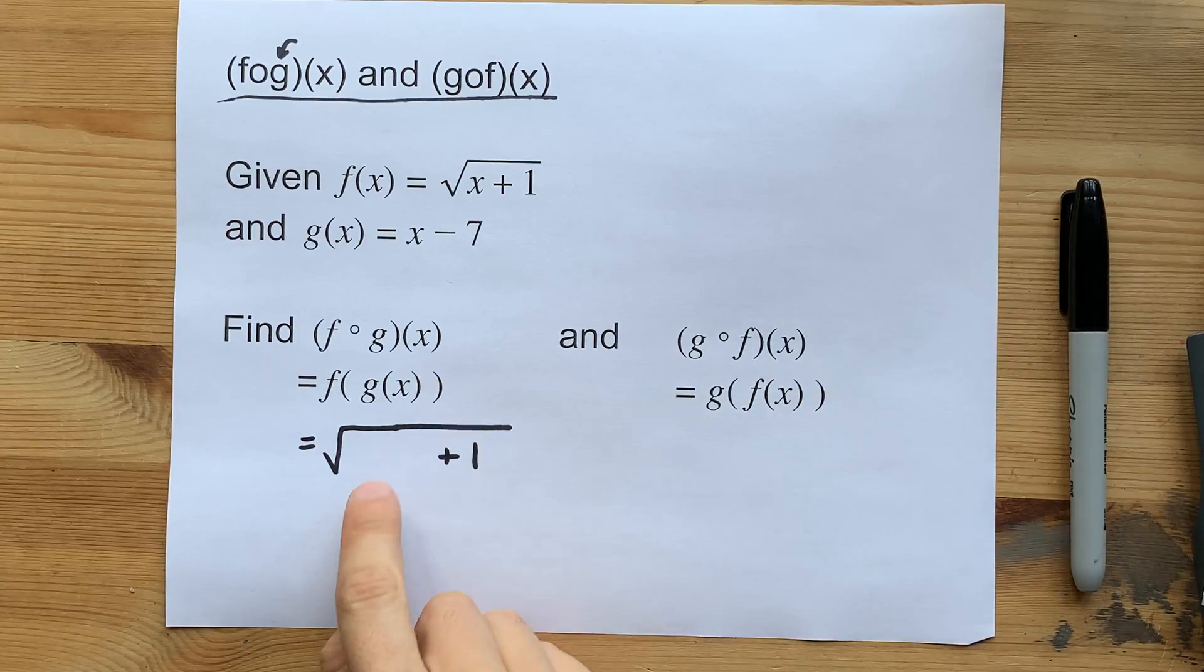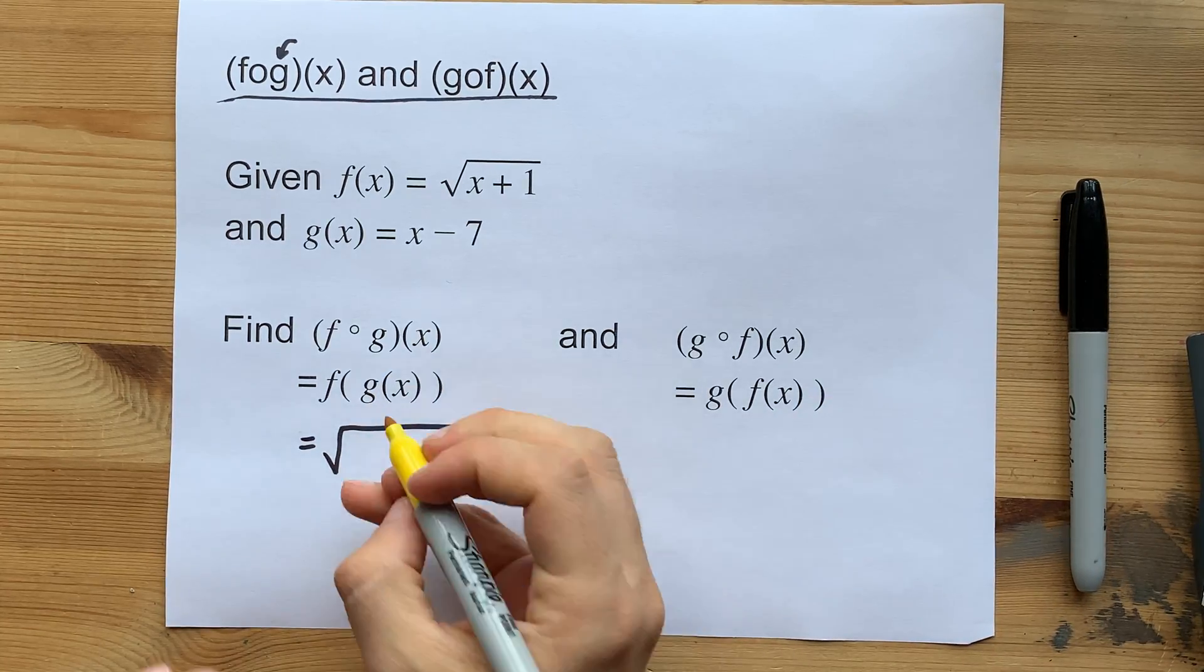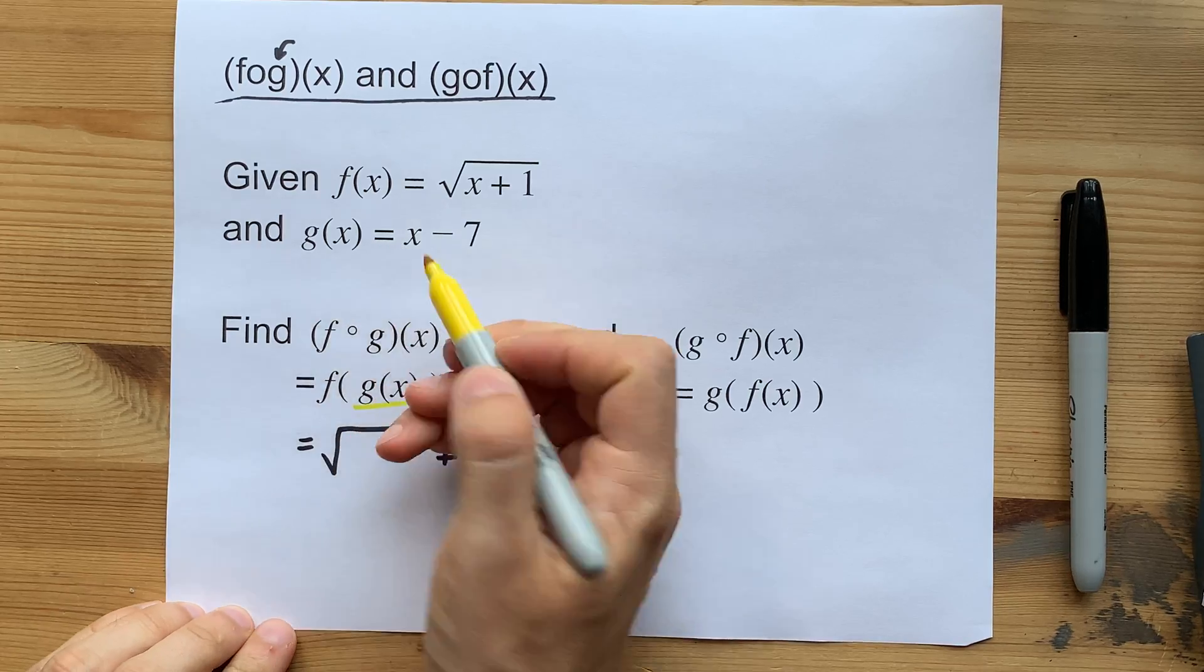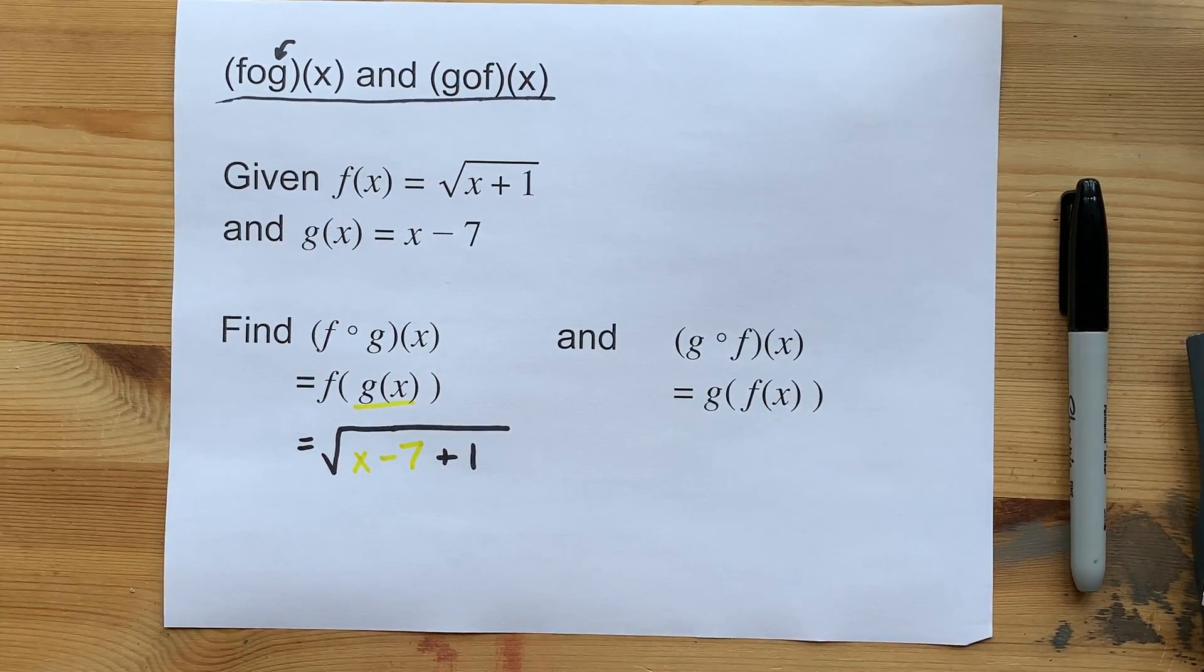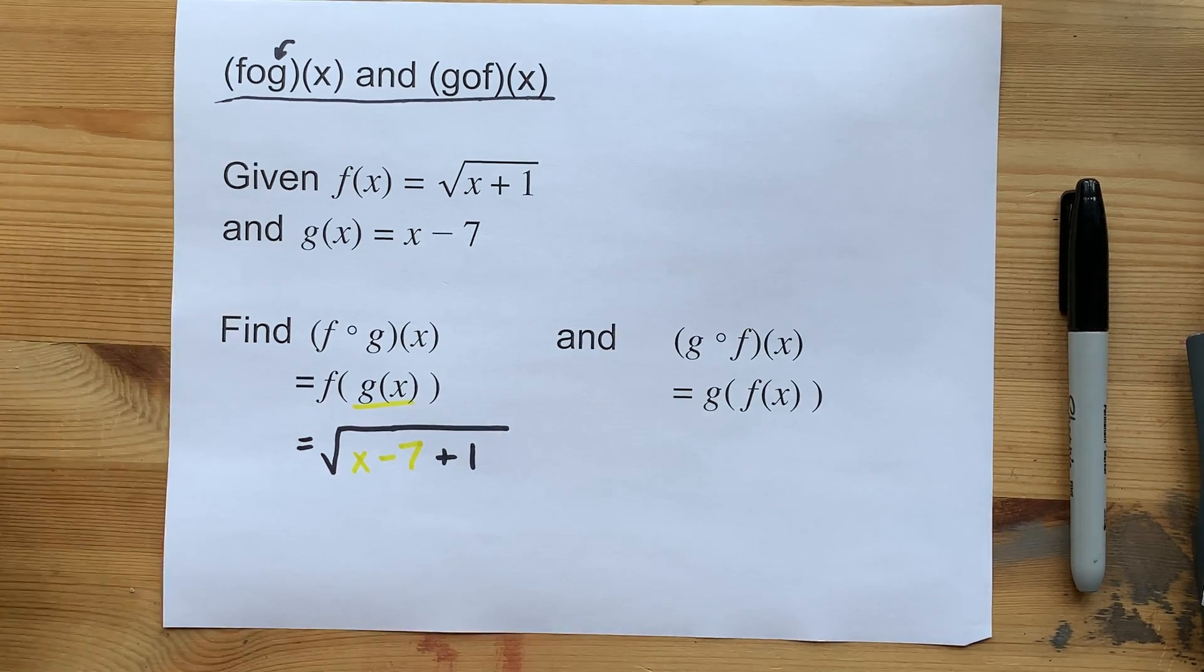Now, instead of x, you're going to write g(x). g(x) is x minus 7. And this is the new algebraic expression that corresponds to your new function.